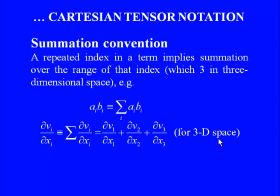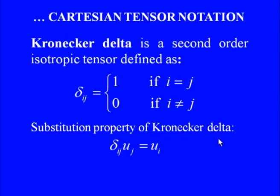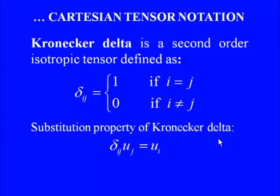Similarly, ∂v_i/∂x_i represents the summation: ∂v1/∂x1 + ∂v2/∂x2 + ∂v3/∂x3 in three-dimensional Cartesian space. We frequently use the Kronecker delta, a second-order isotropic tensor defined as δ_ij = 1 if i = j and 0 if i ≠ j. The Kronecker delta has a substitution property: δ_ij · u_j = u_i, meaning the subscript j is replaced by i.